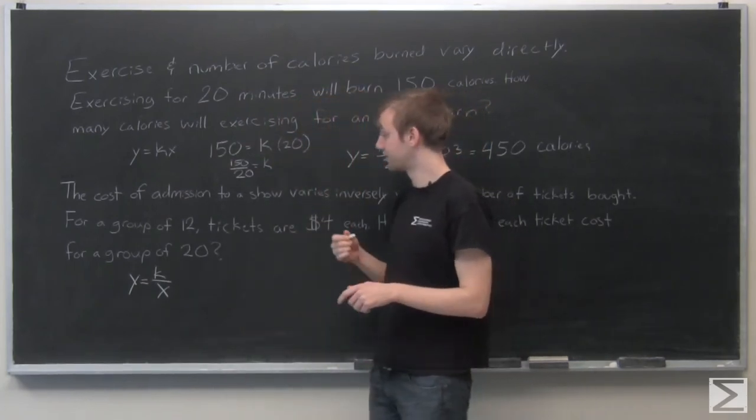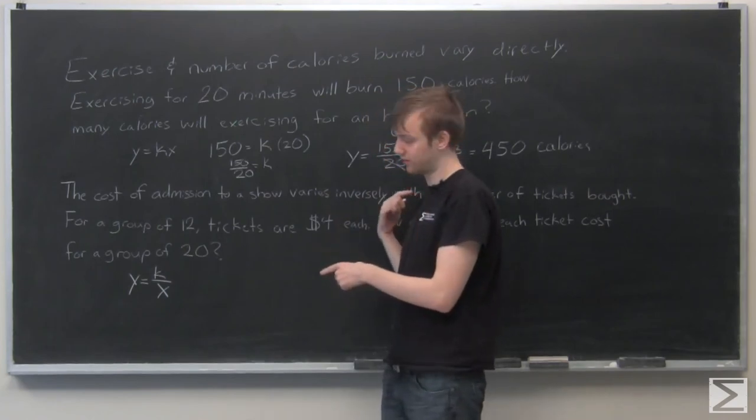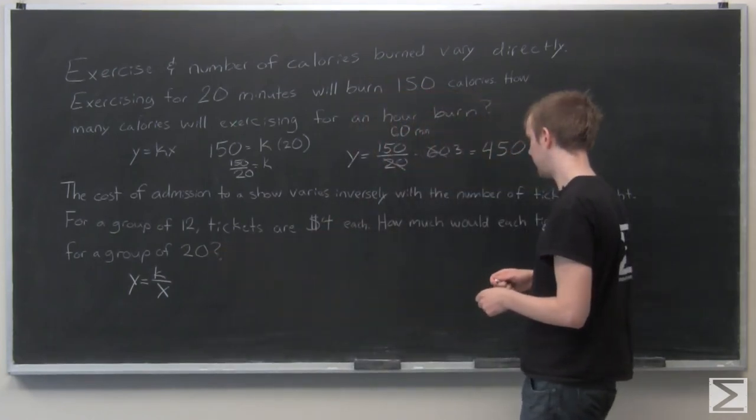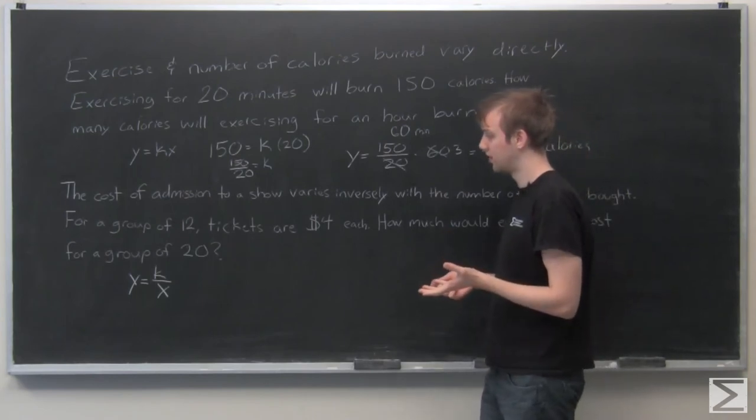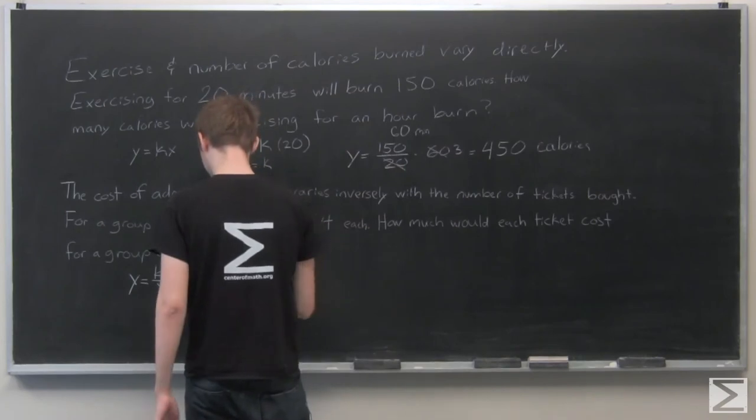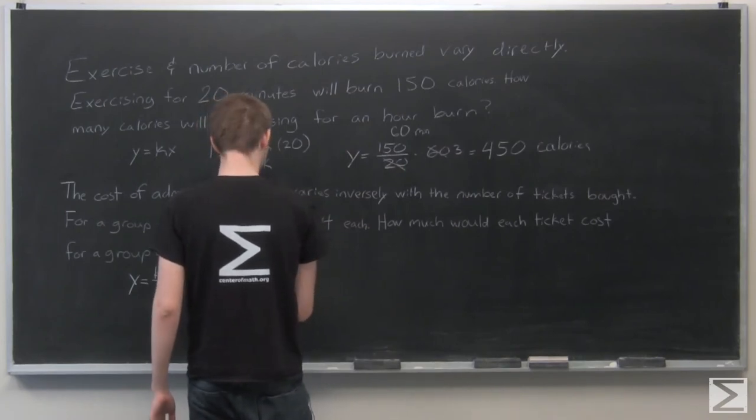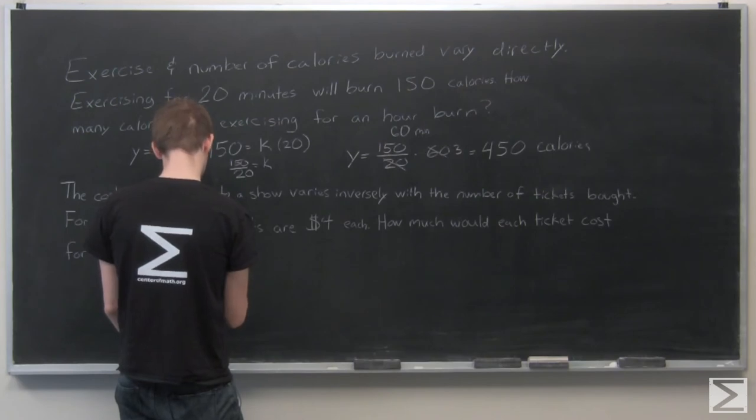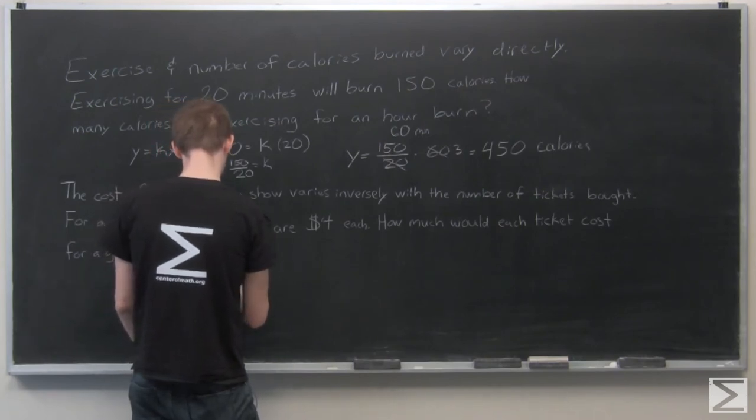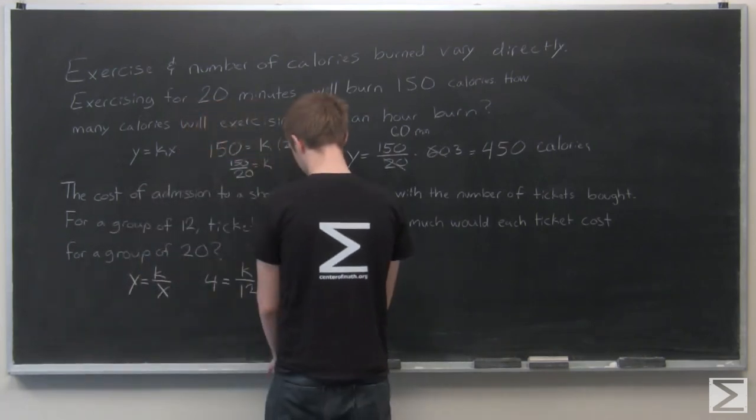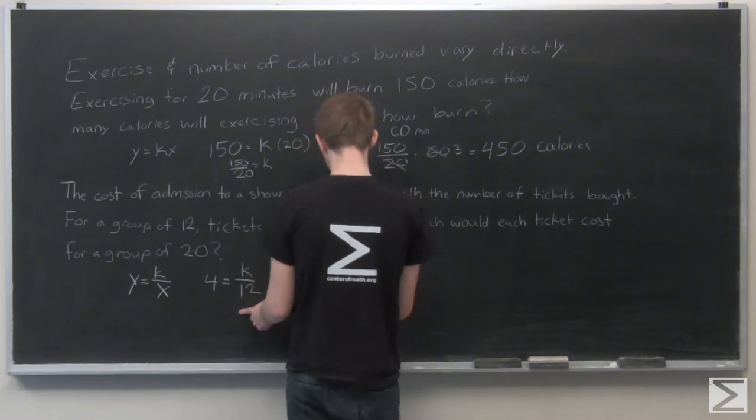Y equals K over X. And now we want to substitute the values that were given into Y and X. Let's see, because the number of people is the one that's increasing, I'm going to make that X. And I'm going to make Y the cost of the ticket. So the ticket's originally $4 each, and that was 12 people. So if we solve for K, K equals 12 times 4, or 48.